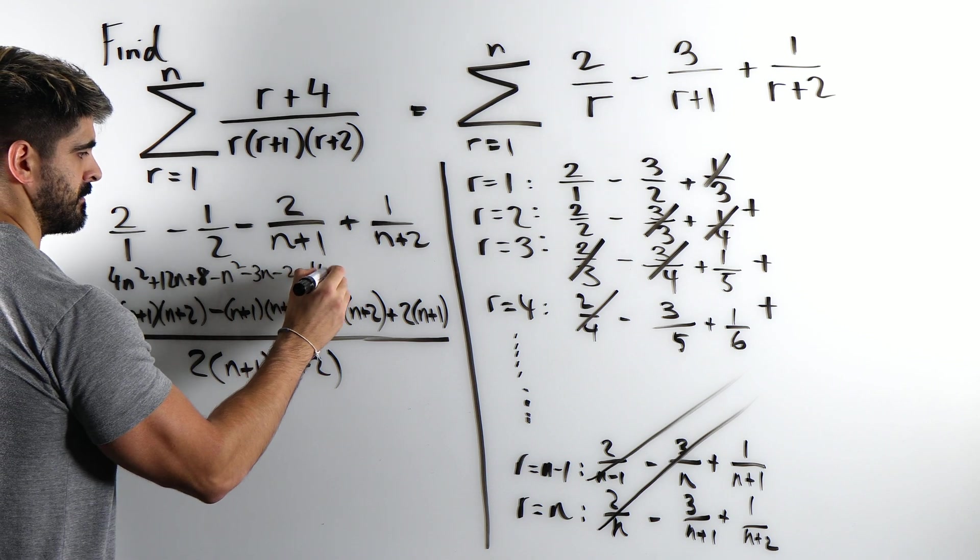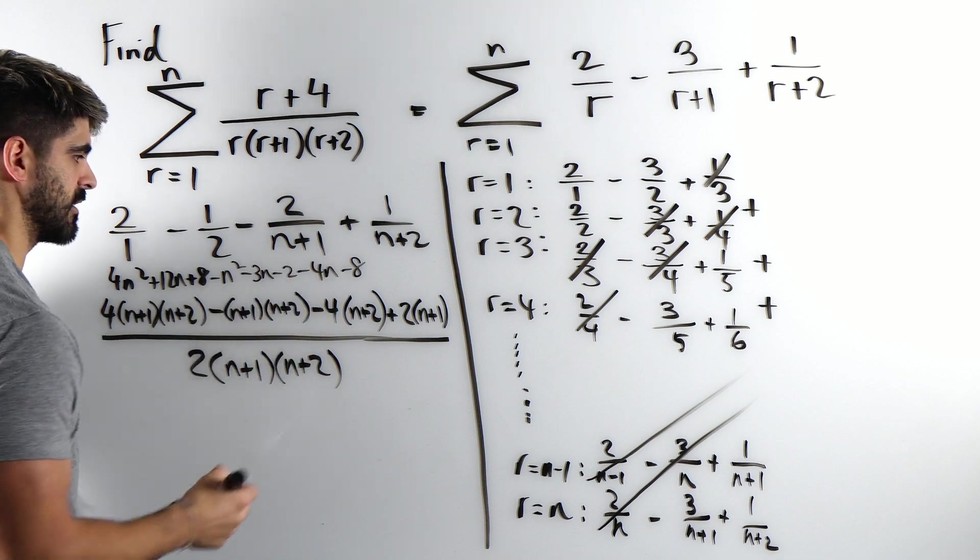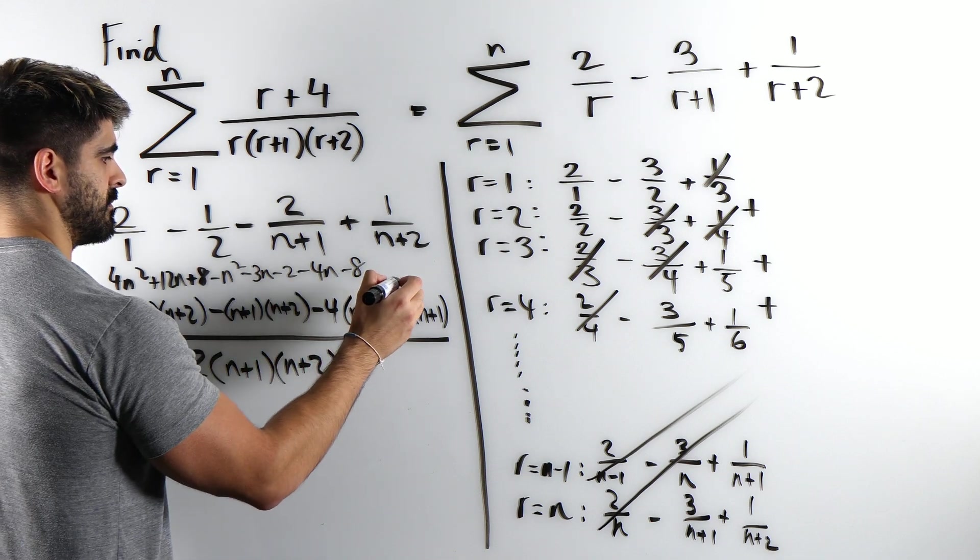Minus 4n minus 8. They will cancel. Plus 2n plus 2.